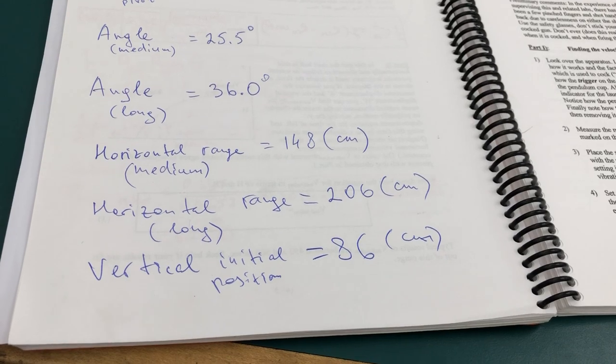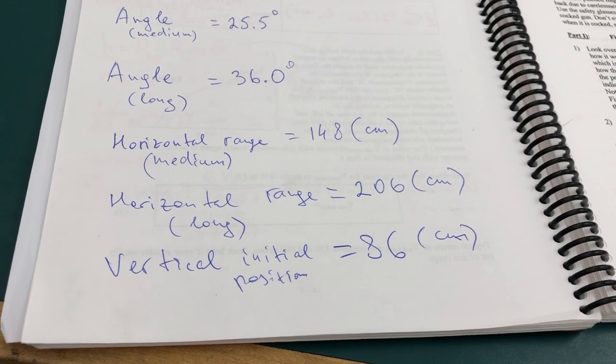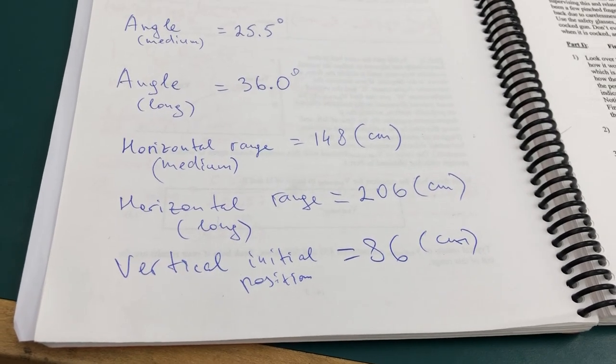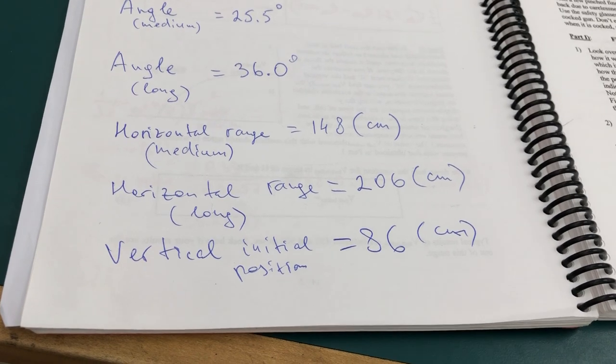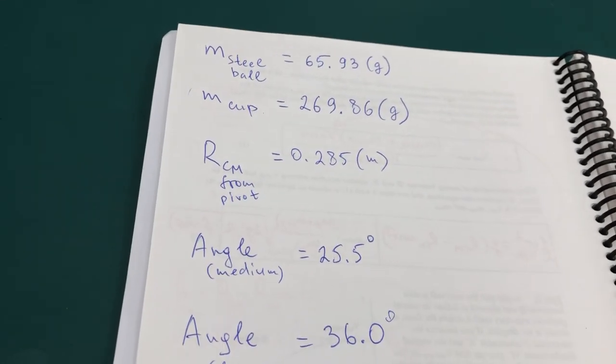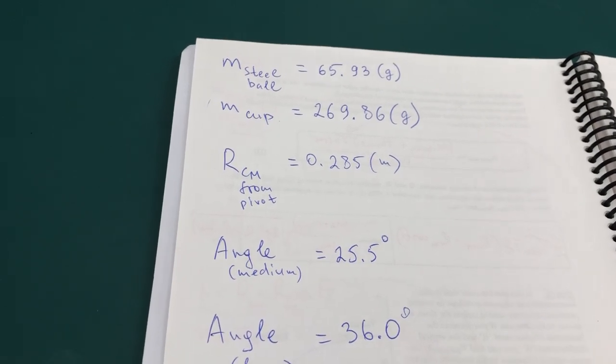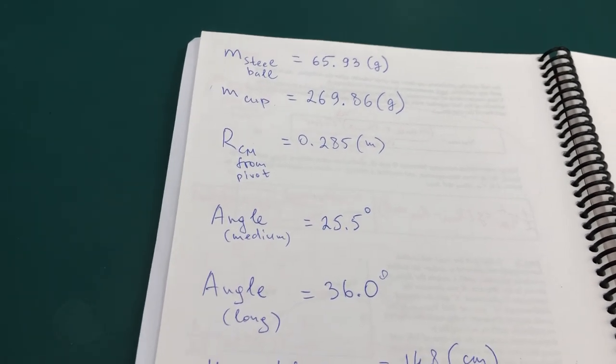So two experiments, same vertical component but different horizontal component. You get two different values and you'll compare those values to the values that you got from conservation principles.